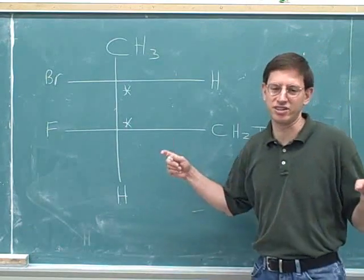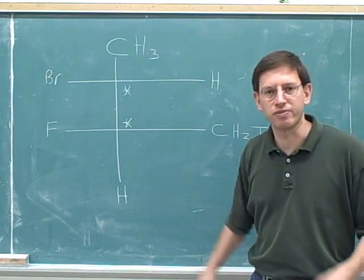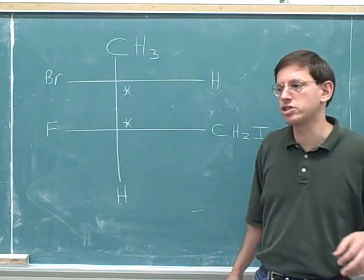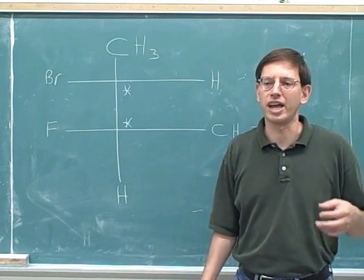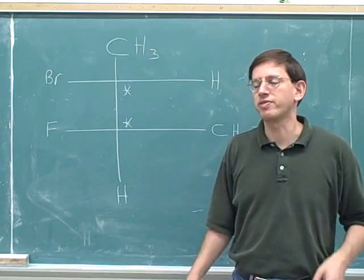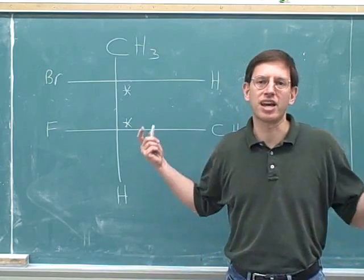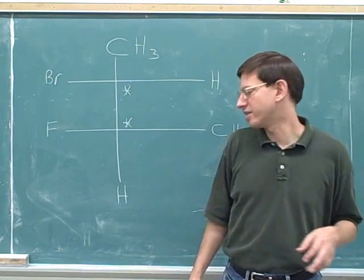What do you do when there's two separate stereocenters? Well, this is not really a very difficult issue. All you have to do is just determine whether each stereocenter is R or S. And the only trick is you have to focus on one stereocenter at a time. We're just going to focus on one stereocenter at a time.